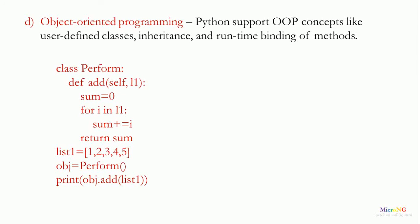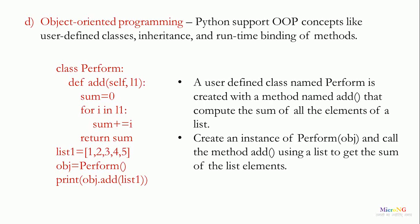In the main module, a list object is created as list 1 and an object for the class is created. Here, object of the class is obj by calling the constructor of that perform and by using the object, the member function can be called by using obj.add. A user-defined class named perform is created with a method named add that compute the sum of all the elements of the list. We create an instance of perform which is named as obj and call the method add using a list to get the sum of all the list elements.